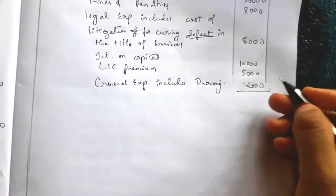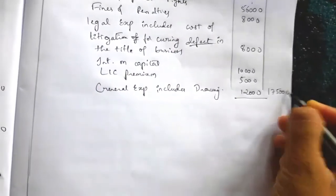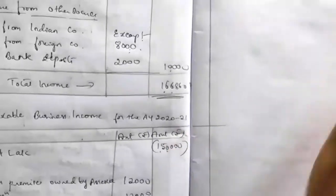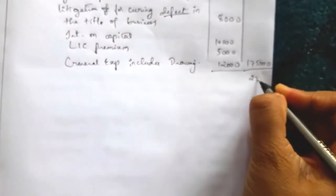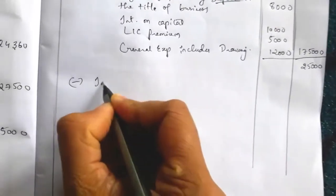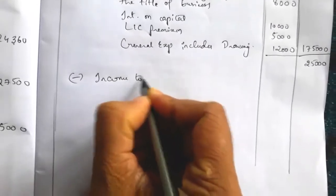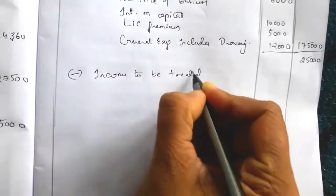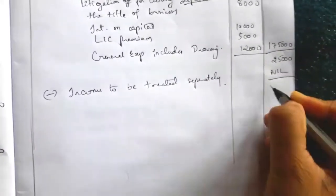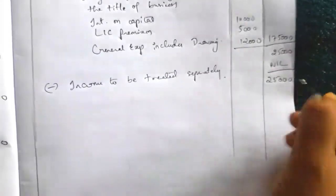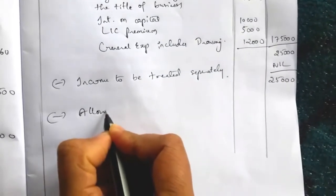Total disallowed expenses = 1,75,000. Net loss (1,50,000) plus disallowed expenses 1,75,000 = 25,000. There is no income to be treated separately on the credit side — nil. So the balance remains 25,000.